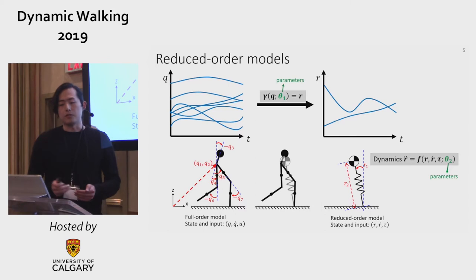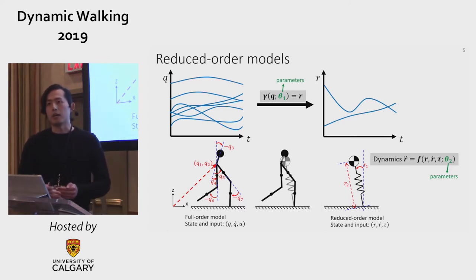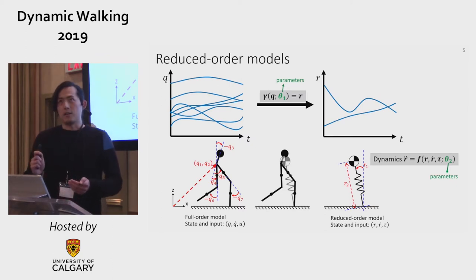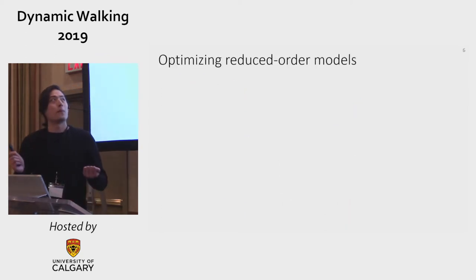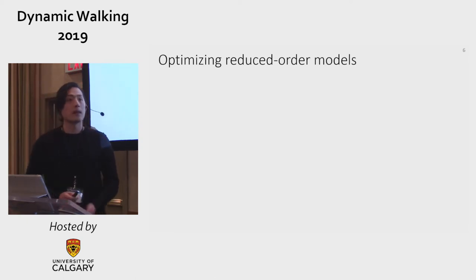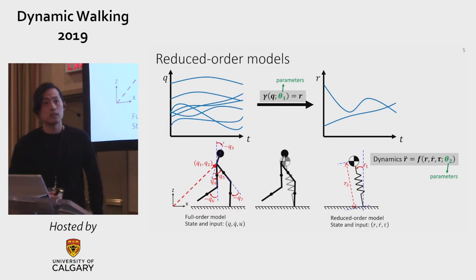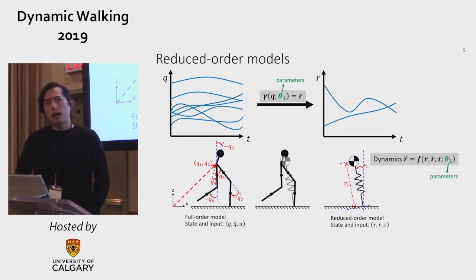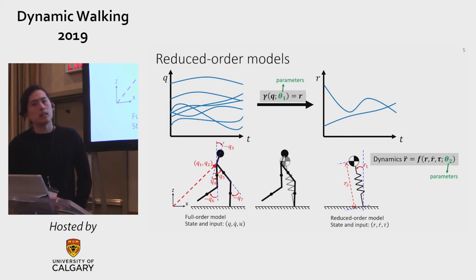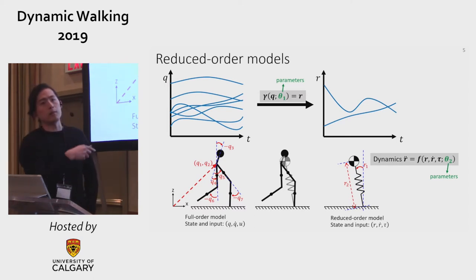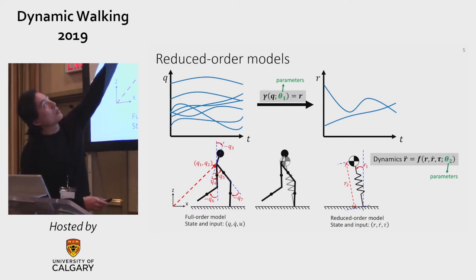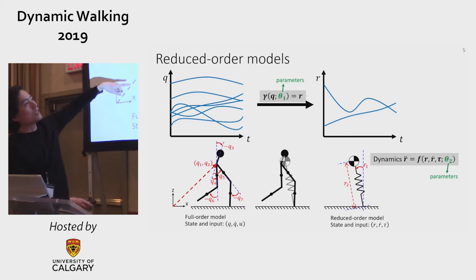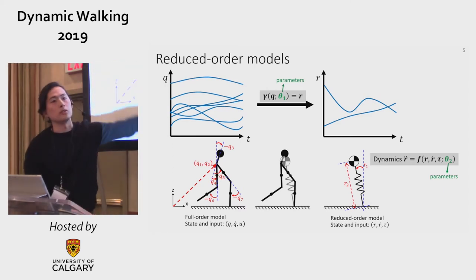We also parameterize these two functions, and now we have something concrete that we can optimize over. The gamma function maps Q, the full order model configuration, to R, which is the reduced order model configuration — I just have this relationship, I do not project back.